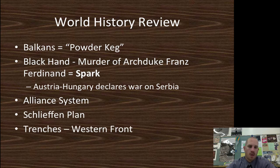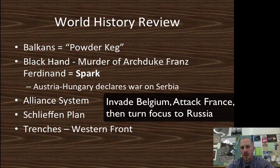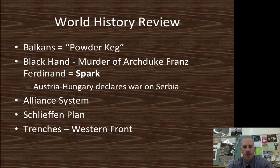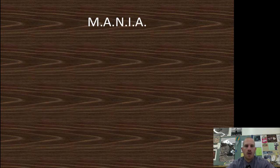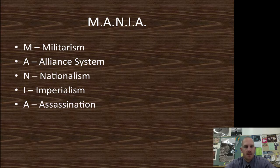The Schlieffen Plan — if you remember from world history — was the idea to take out the Western allies first, then turn all German resources to Russia, whom they considered backwards and slow to mobilize. The trenches were the most brutal part of the war along the Western Front, for a total gain of approximately seven miles throughout the entire war. An easy way to remember the causes is MANIA: Militarism, Alliance system, Nationalism, Imperialism, and Assassination — the five reasons World War I started.